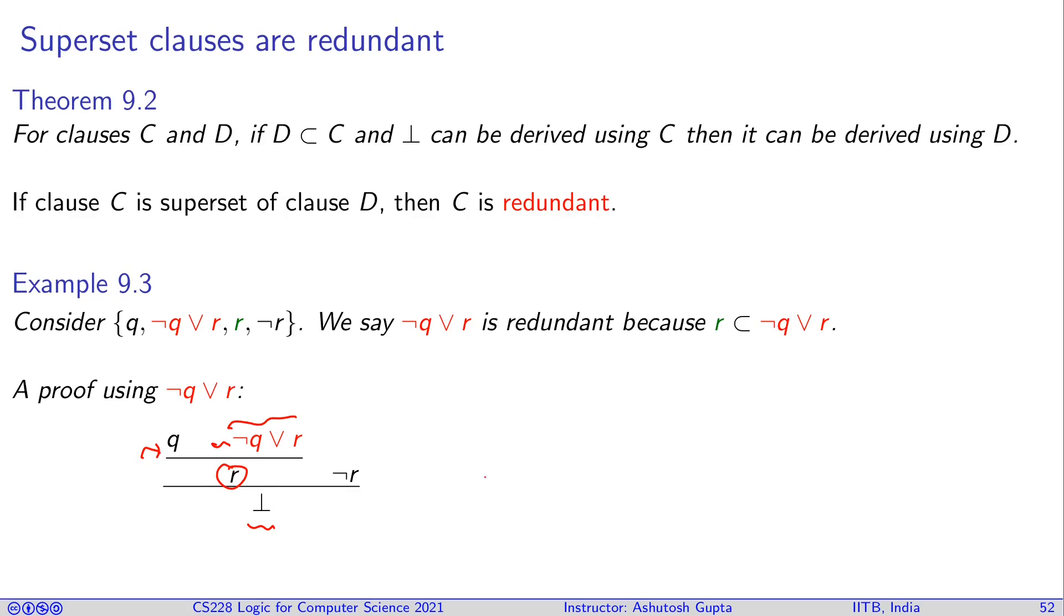Now, what we do is that we can replace this thing by the shorter proof. So, if I remove this thing and replace it by R, then this resolution becomes useless because Q need not be removed, you can directly get here. And then R and not R gives you false.